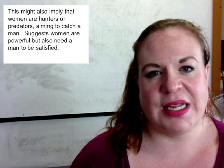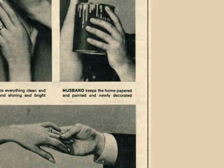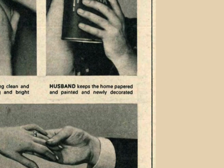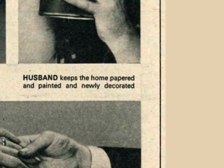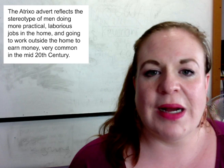And I think that is to reflect the female target audience. In the Atrixo hand cream advert, we see a man wearing a jacket, cufflinks and a shirt — suggesting again that he goes out to work. The caption reads: 'husband keeps the home papered and painted and newly decorated.' There is a suggestion that the men do the DIY around the home or go out to work, whilst women do the more domestic chores.